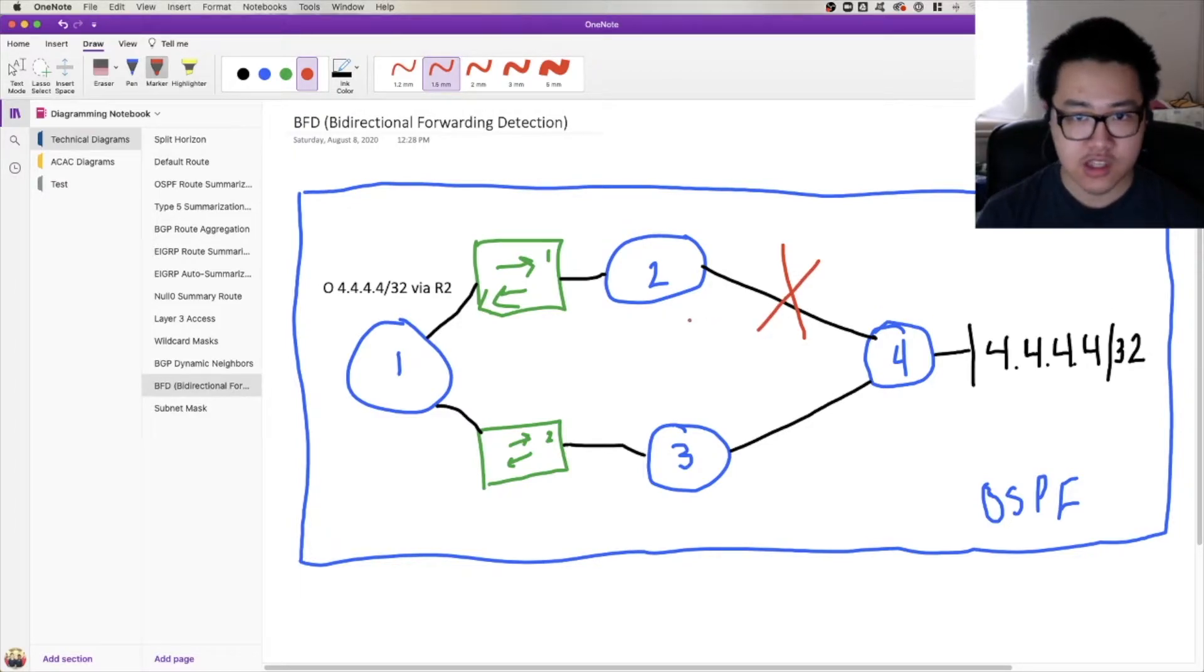Now, what will happen? Firstly, the interfaces on both R2 and R4 end up going down because you've now just lost layer 1 reachability. Those interfaces are going to go down. And along with those interfaces, the OSPF adjacency behind that interface will also go down. So basically, the adjacency from R2 to R4 goes down, R2 loses a copy of 4444-32 from its LSDB. And long story short, without going into the specifics of how OSPF does this, R1 will transition the next hop from R2 to R3 if that link goes down.